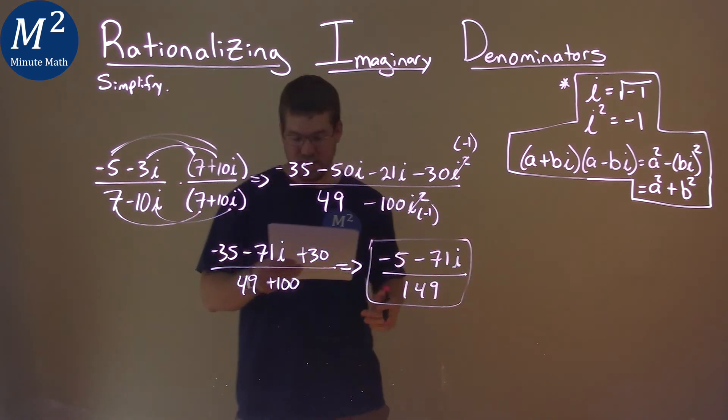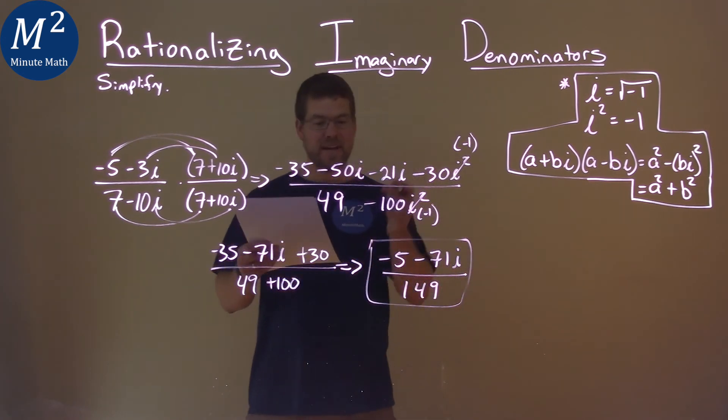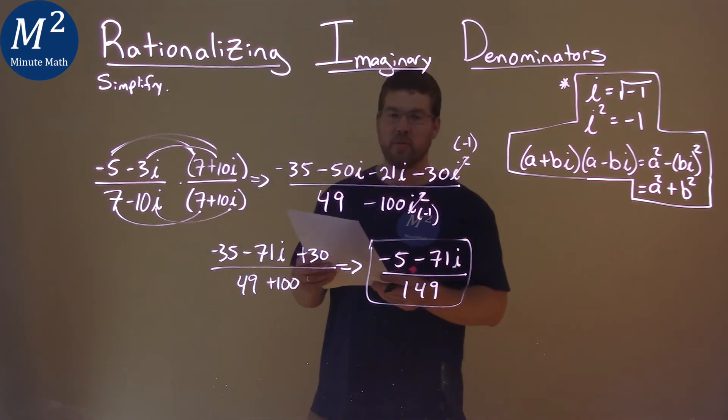And that's actually our final answer: negative 5 minus 71i over 149.